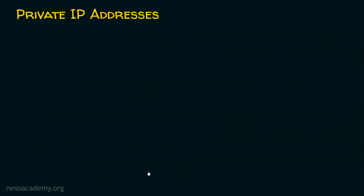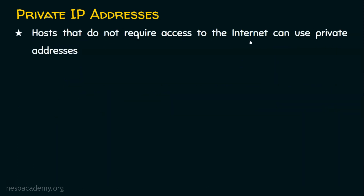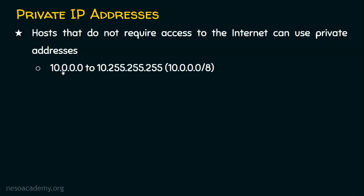Let's now see what the various private IP address ranges are. Hosts that do not require access to the internet can use private addresses. The first range is 10.0.0.0 to 10.255.255.255 — any IP address that starts with 10 is a private IP address. These private IP addresses are not recognized on the internet and can be used to establish internal communication in an organization. The network 10.0.0.0/8 is a private IP address belonging to Class A.